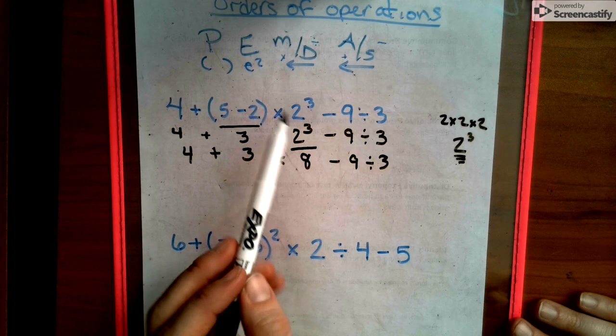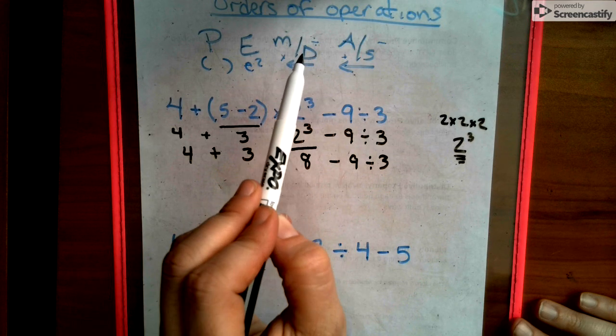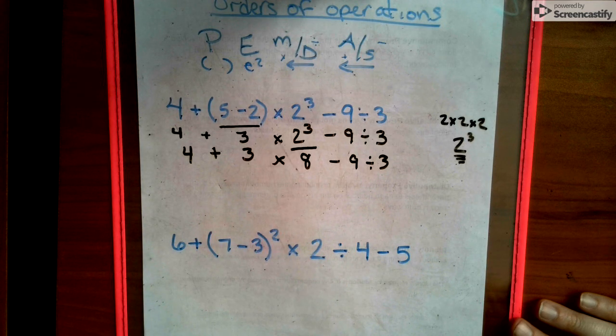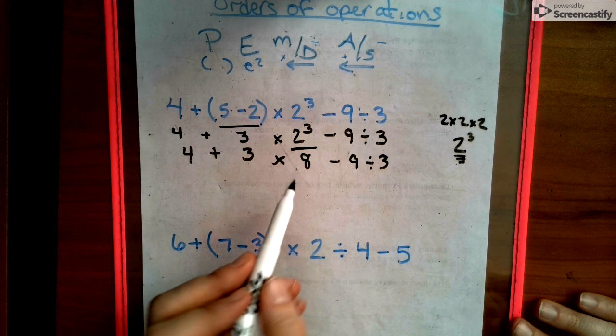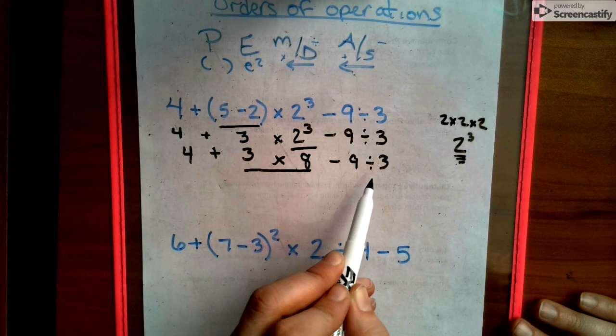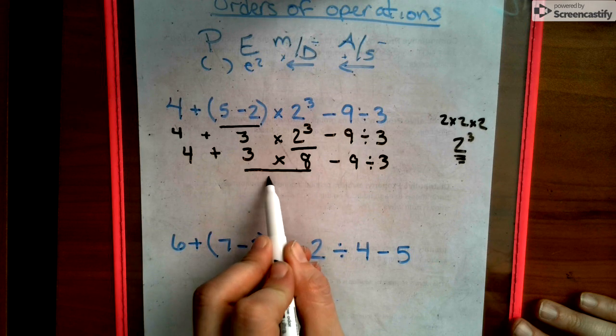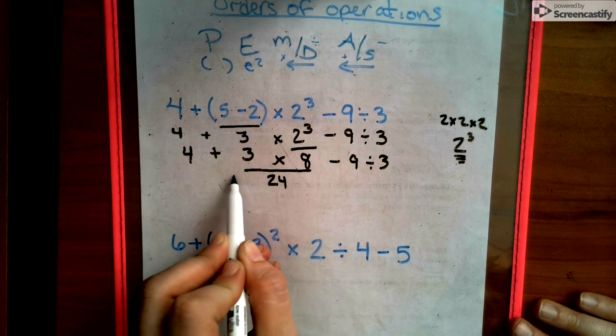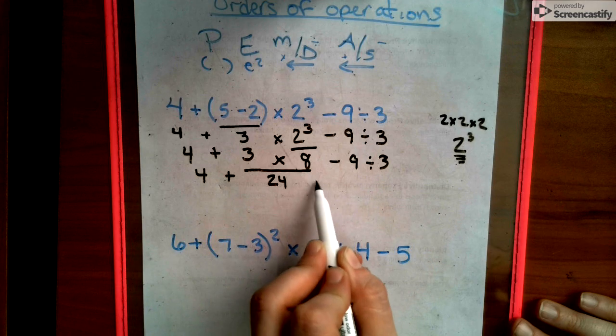So then we say, okay, out of multiplication or division, which one is closest to the left, if there even is any? And yes, there's multiplication that comes first, and then there's division. So we do 8 multiplied by 3, which is 24. We bring down everything else that we did not touch.